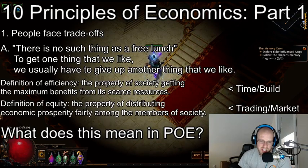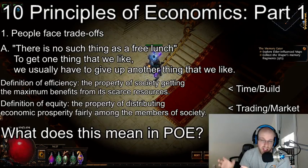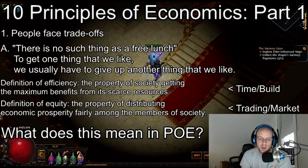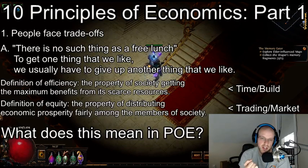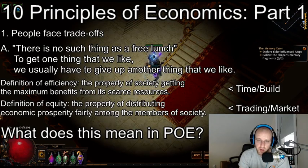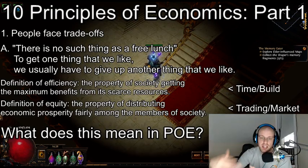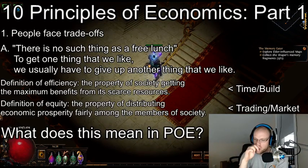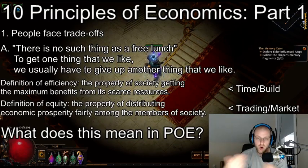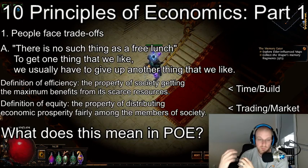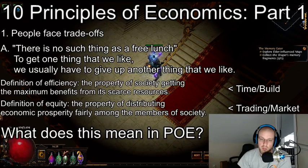The second aspect is equity — how does equity work in Path of Exile? Distributing economic prosperity: how are you going to use the market and trading as other people acquire certain things? There are exalts generated every single day through divination cards and regular drops, and chaos generated every day through the recipe and through farming. So there's more and more currency items and divination cards getting added into the economy. How is that going to be distributed, and how are you going to take advantage of that distribution — either through farming yourself or by using the market and trading?